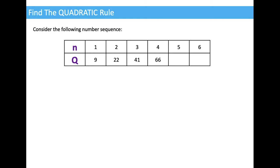Let's look at this sequence. When n is 1, 2, 3, 4, 5, or 6 — that's just the position of the number in the sequence. We've got this other number, Q, that is 9, 22, 41, 66, and then some space for us to predict some further values.